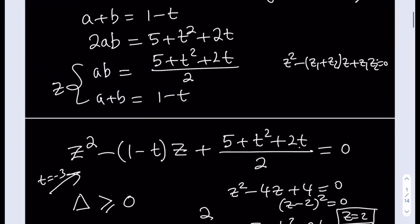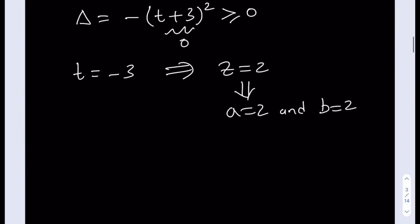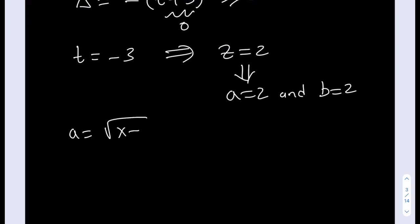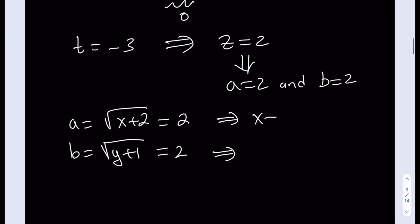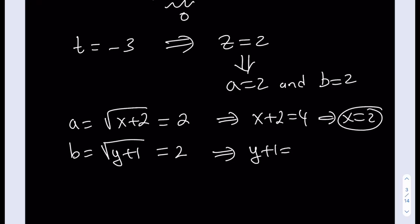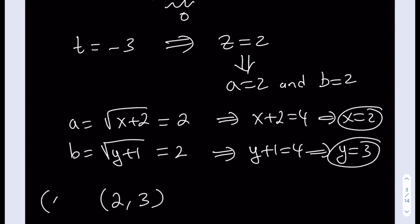Now back-substituting: a equals the square root of x plus 2, and since a equals 2, squaring both sides gives x plus 2 equals 4, so x equals 2. And b equals the square root of y plus 1, and since b equals 2, squaring gives y plus 1 equals 4, so y equals 3. Therefore our only real solution pair is (x, y) equals (2, 3).